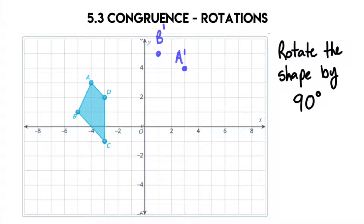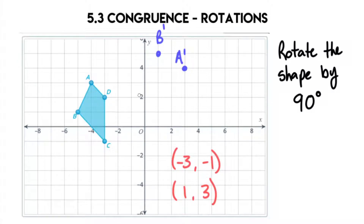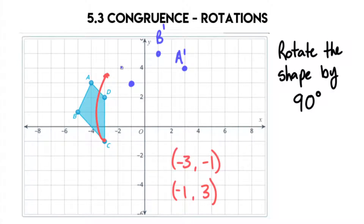Next up, let's do C. C is at negative 3, negative 1. Once again, 90 degrees — so these two are switching: 1 and 3. However, C is down in quadrant 3, which means when it rotates 90 degrees it's actually going to go up this way. So C actually ends up in quadrant 2, where the X value is negative and the Y value is positive. That means the new point is negative 1, positive 3. So C prime is going to be right here.